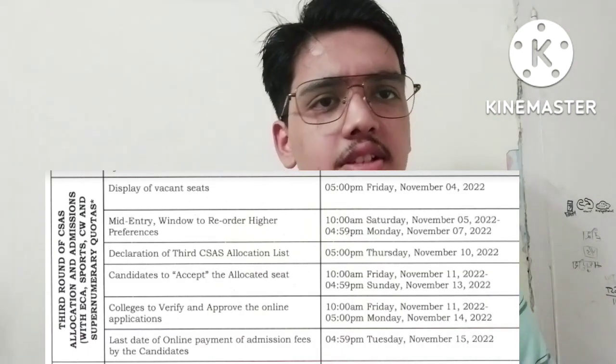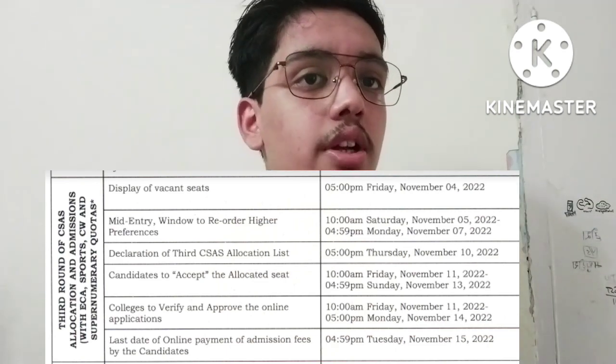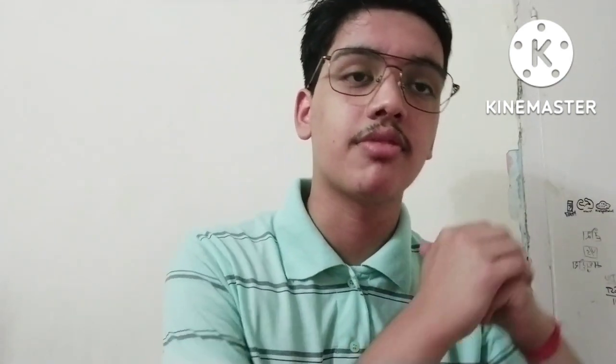After the 1st and 2nd Merit Lists, the 3rd Merit List will be released following the same procedure — details of vacant seats will be shown on November 5th, followed by a preference reorder window, and then the 3rd Merit List release on November 10th.